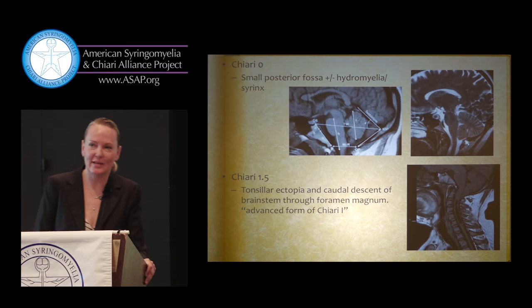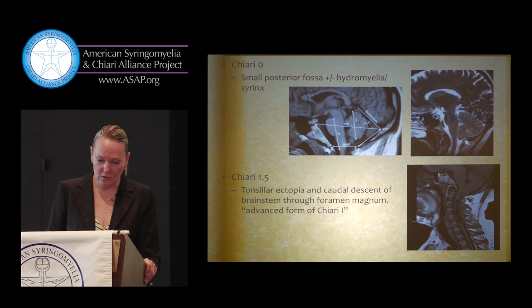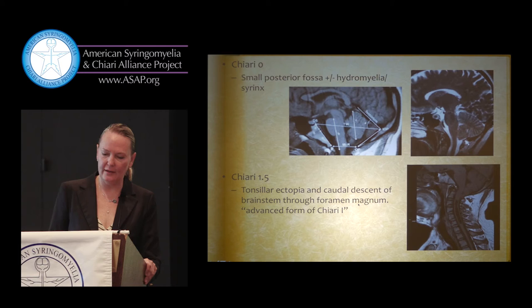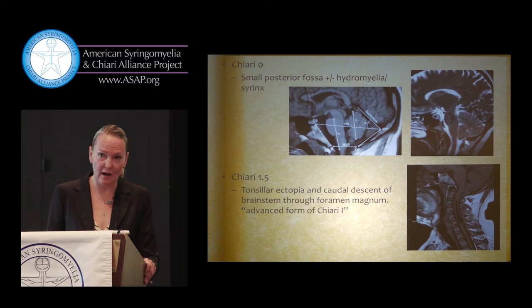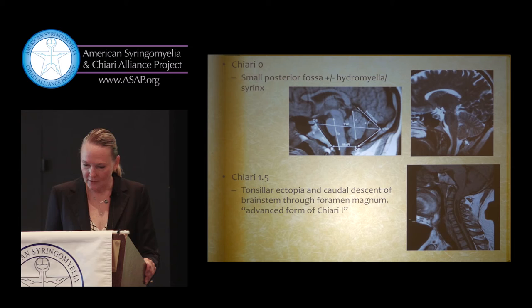Chiari 1.5 is thought to be an advanced form of Chiari 1 — you have not just tonsillar herniation but pretty severe tonsillar herniation causing peaking of the tonsils and tonsillar ectopia, and the brainstem also travels down. When we open up the posterior fossa, we find these tonsils looking very ischemic — sort of a different color than the rest of the cerebellum — indicating they've been compressed there for some time.